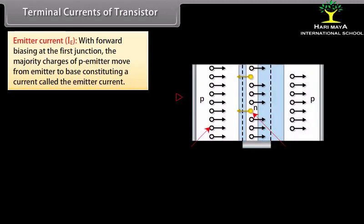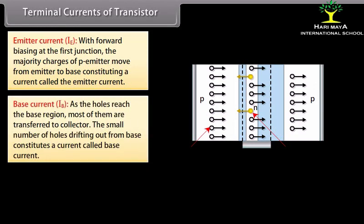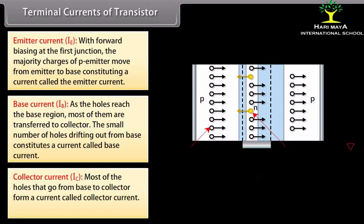Terminal currents: Considering a PNP transistor, with forward biasing at the first junction, majority charges of the P emitter move from emitter to base, constituting the emitter current IE. As holes reach the base, most are transferred to the collector. The small number of holes drifting out from the base constitutes the base current IB, while most holes going from base to collector form the collector current IC. IE = IB + IC.